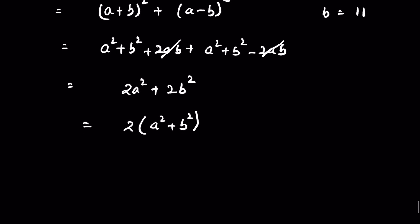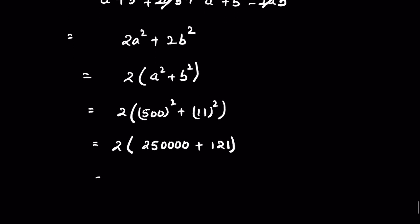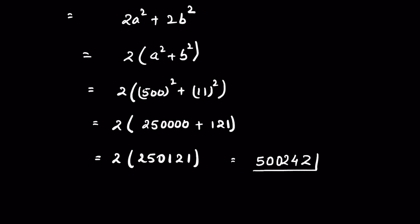Now we have considered a as 500, so let's substitute the values. 500² plus 11². Now it's easier to square these numbers. Square of 500 is 250,000 plus square of 11 is 121. Add these and then multiply with 2. So this is our answer.